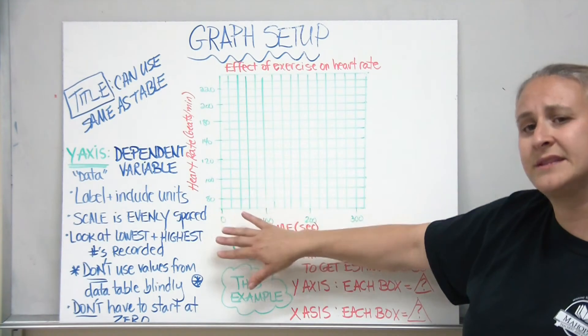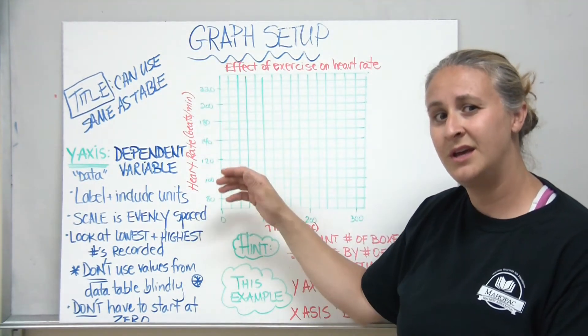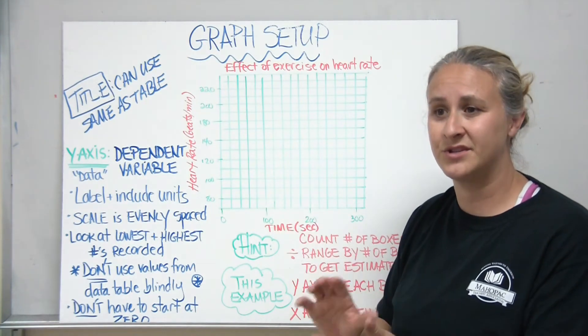Some hints. In order to get the scale, sometimes it's easiest if you count the number of boxes that you have in the range and divide that by the range that you have.